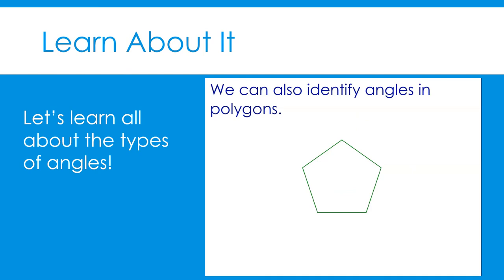Finally, let's examine this pentagon. It has five angles. If we create a right angle with one of the line segments, you can see that the angle of the pentagon is more open than the right angle we created. Therefore, it is an obtuse angle.